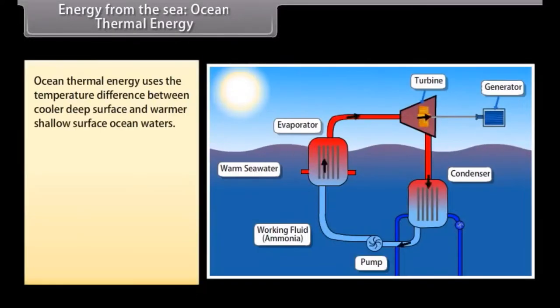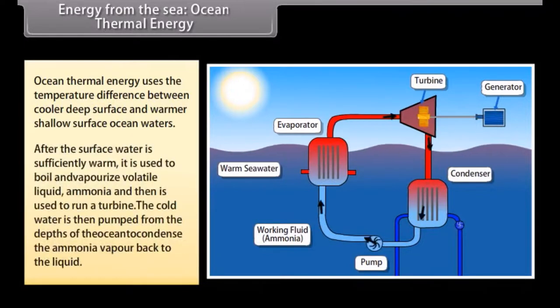Energy from the sea: Ocean thermal energy. Ocean thermal energy uses the temperature difference between cooler deep surface and warmer shallow surface ocean waters to run a heat engine and produce useful forms of energy, mainly electricity. The heat engine gives greater efficiency and power when it is run with a large temperature difference. In the oceans, the temperature difference between surface and deep water is greater in the tropical areas. After the surface water is sufficiently warm, it is used to boil volatile liquid ammonia. The vapors of ammonia are then used to run a turbine. The cold water is then pumped from the depths of the ocean and is used to condense the ammonia vapor back to the liquid.